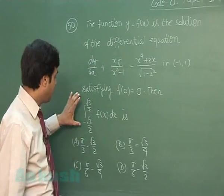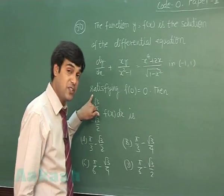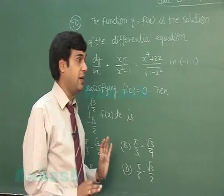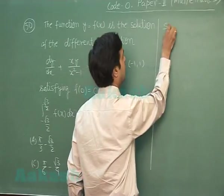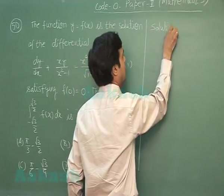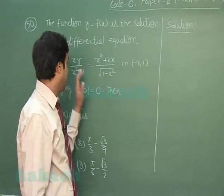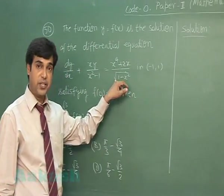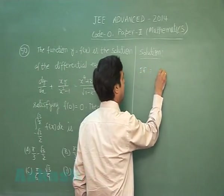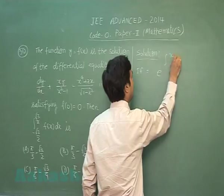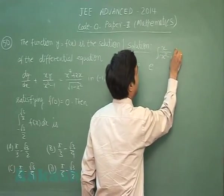Then, I have to find the value of the given integral minus root 3 by 2 to plus root 3 by 2 f(x) dx. Fine. Let's start it. Given differential equation, we can see it is linear differential equation. So, let's find out the integrating factor e to the power integral x upon (x² minus 1) dx.